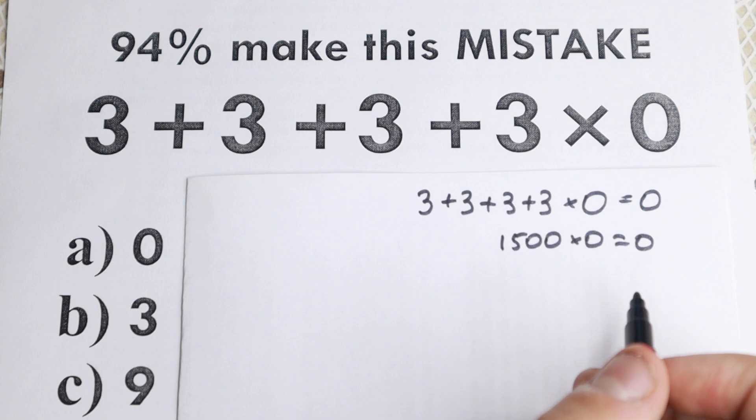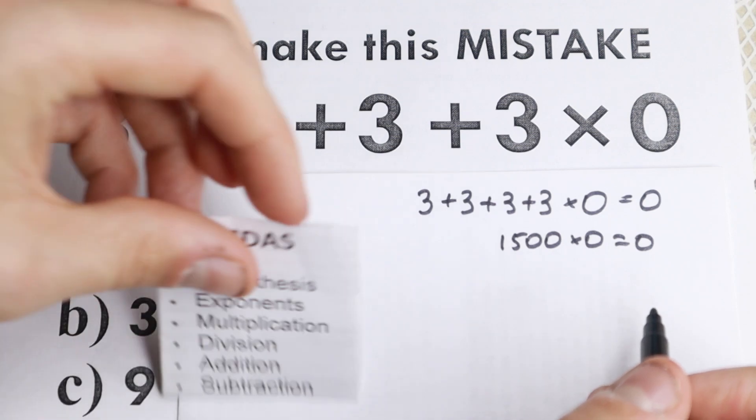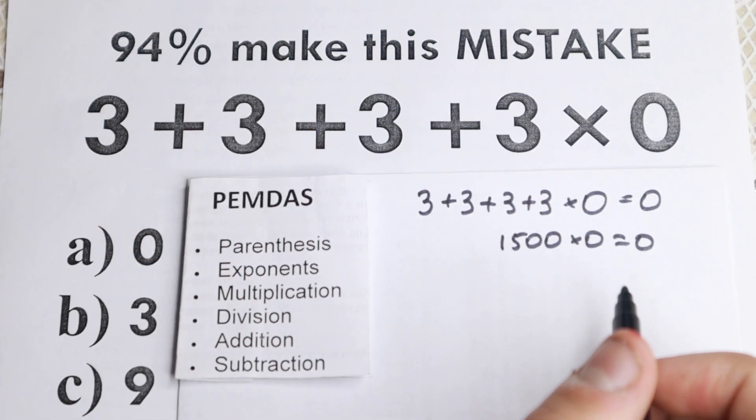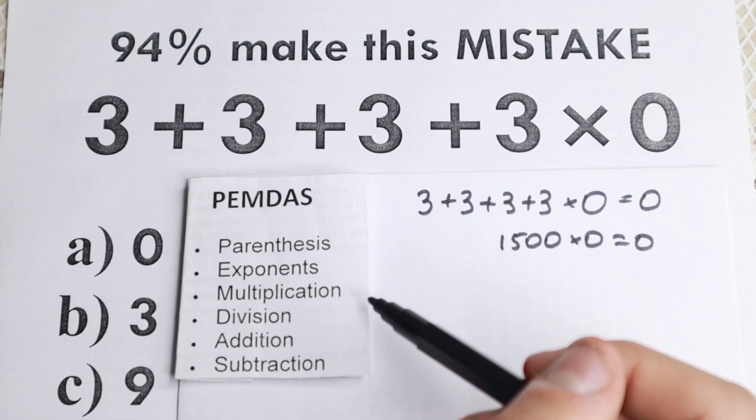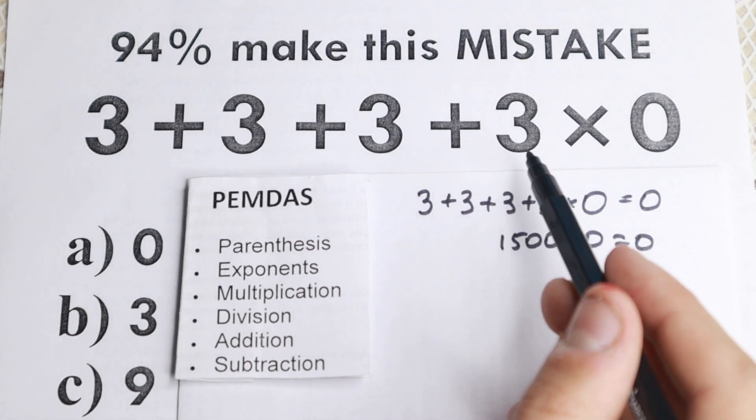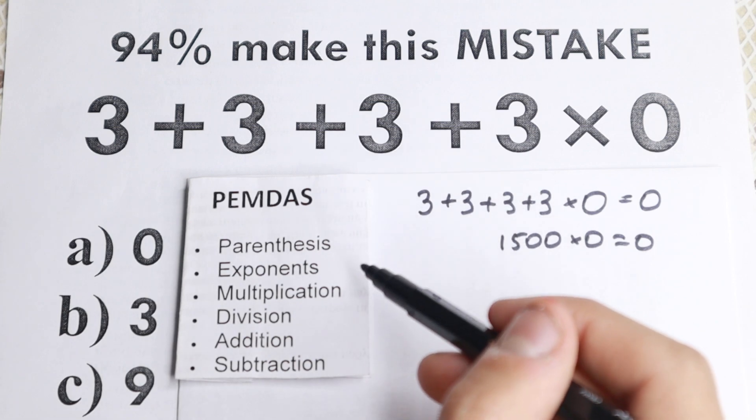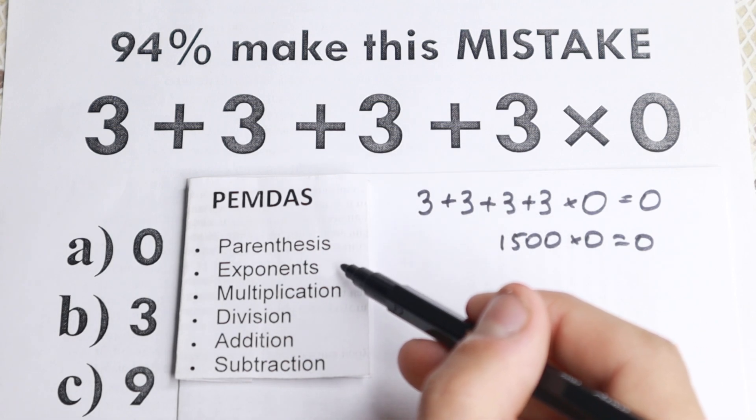but then I show them the order of operation. So we have this order of operation. Do we have parentheses right here? Because the first step is parentheses right here. We don't have any parentheses, I don't see any of those. So next step, we have exponents.